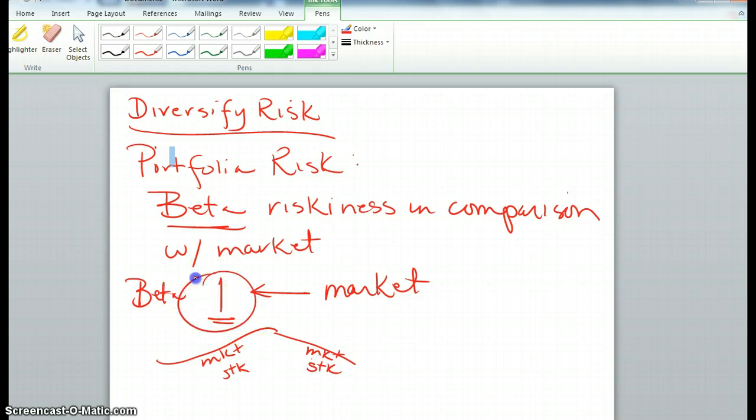If beta is greater than 1 then for a particular stock, it means that that stock is riskier than the marketplace. And if the beta is less than 1 then that particular stock is less risky.